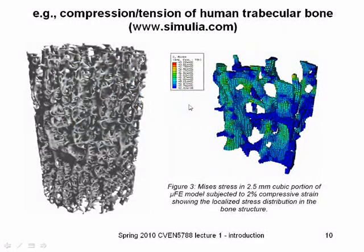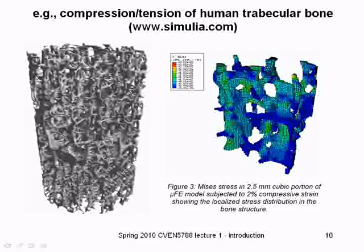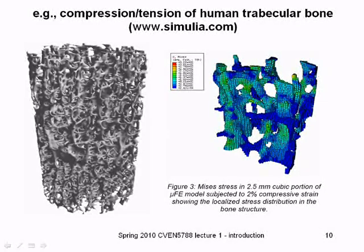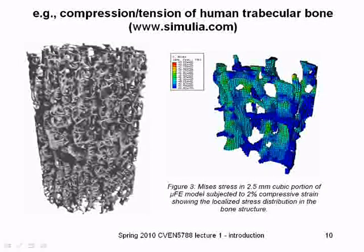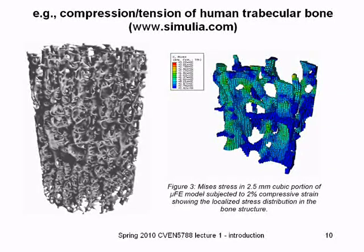Here's a porous material — trabecular bone — modeled for the solid phase only, approximated in a Lego-like fashion using hex brick elements to represent the microstructure. This is just a solid analysis, not poromechanics. To solve this at the pore-space scale, you'd need coupling between a fluid model like CFD and this solid model. The poromechanics we're interested in models the bone as a continuous mixture of solid and fluid, capturing fluid flow through the solid and the effect on pore space compressibility.